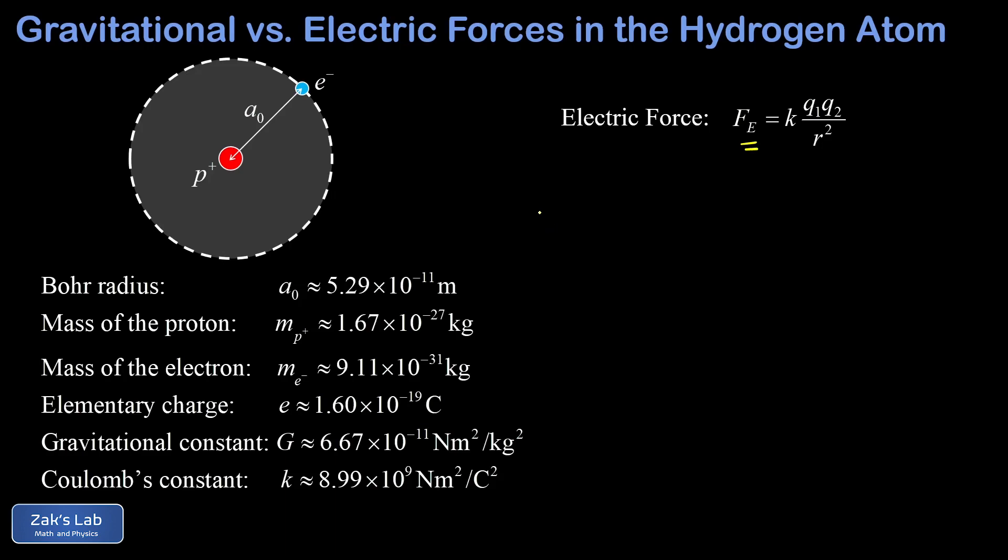So again, we just need to plug everything in. And notice in the numerator here that each of these particles has the same magnitude of charge. It's 1.6 times 10 to the negative 19 Coulombs. We're also computing a magnitude of this force, so we're not concerned with the fact that the charge is negative on the electron and positive on the proton. So we're going to get two copies of that factor of 1.6 times 10 to the negative 19. So I can just write that more compactly by putting an exponent of two on it. And there's our Bohr radius, and we're going to square that as well.